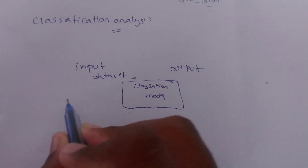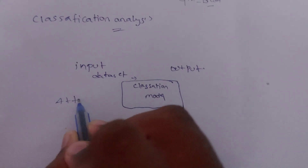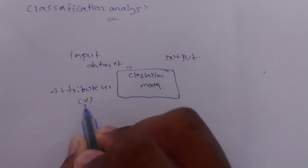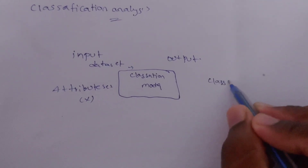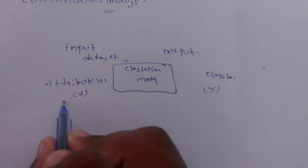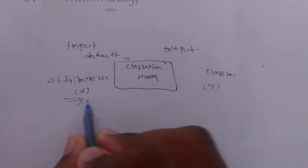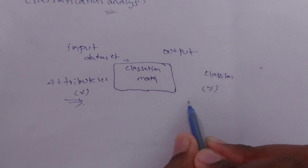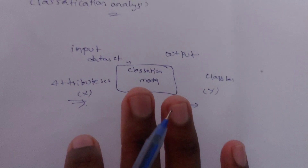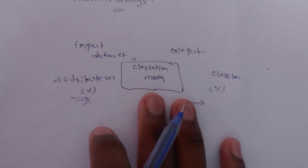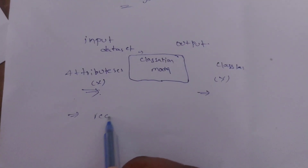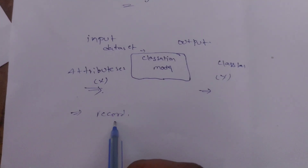We have input data set with an attribute set — let this be X. And output data set with the class label — let this be Y. This is the main theme of classification.